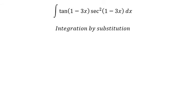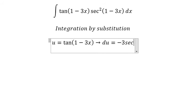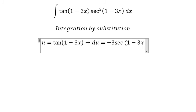We set u equal to tan(1 - 3x). Taking the derivative of both sides, we get du equals negative 3 sec²(1 - 3x) dx.